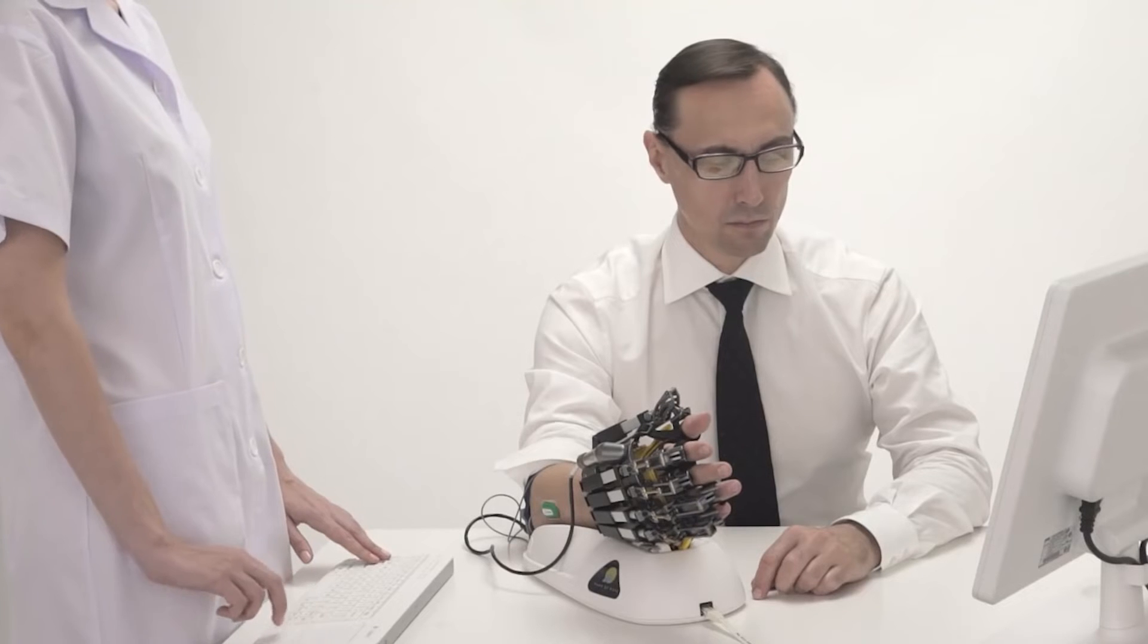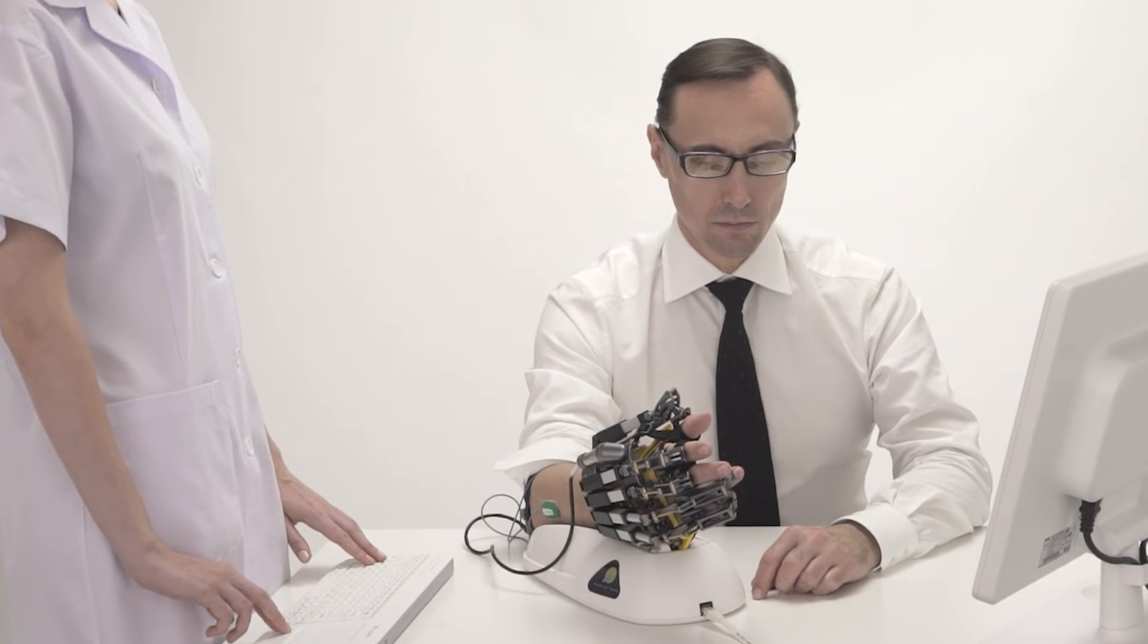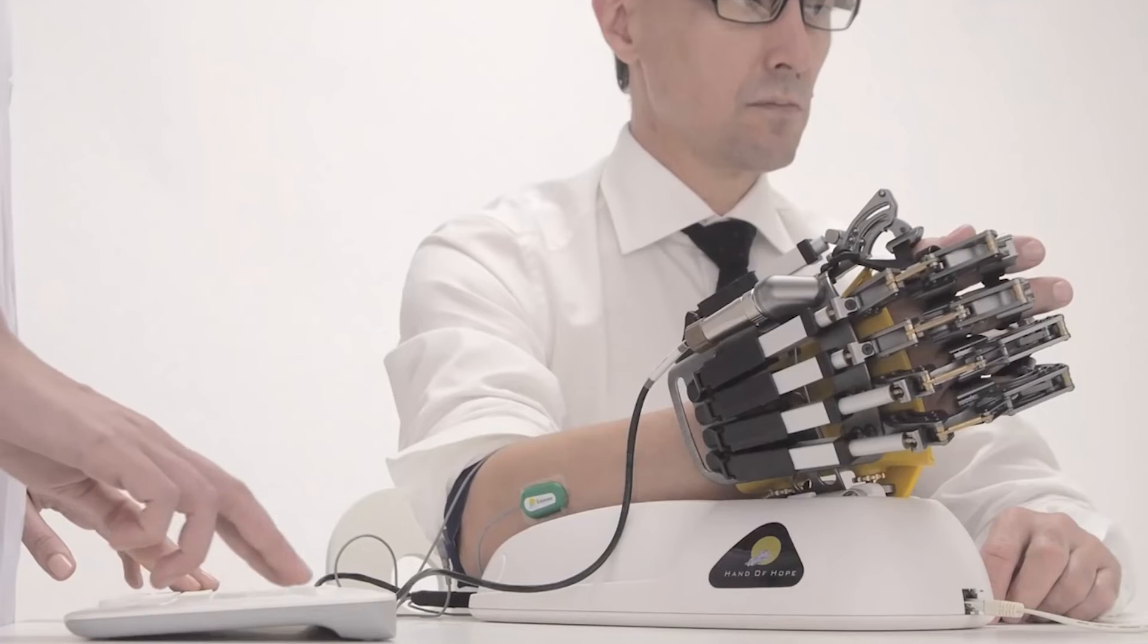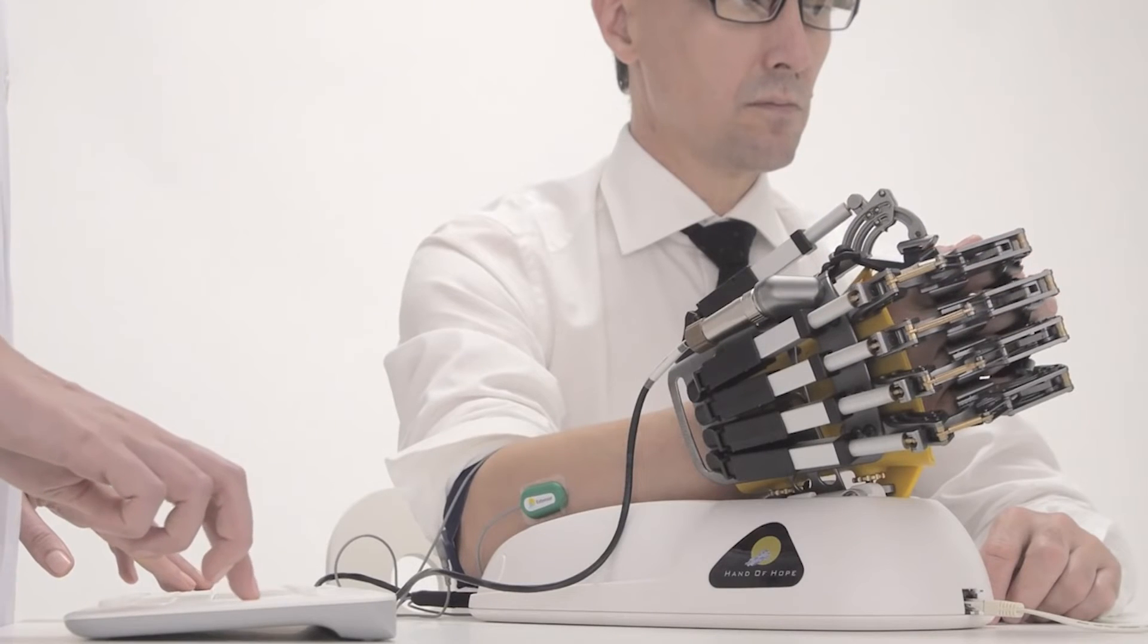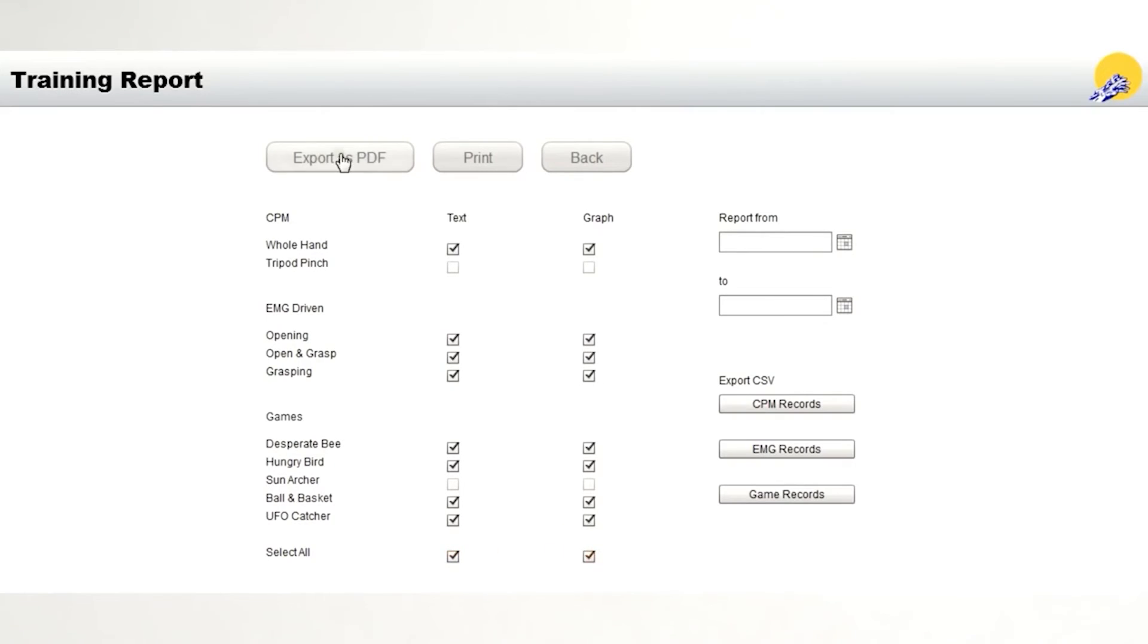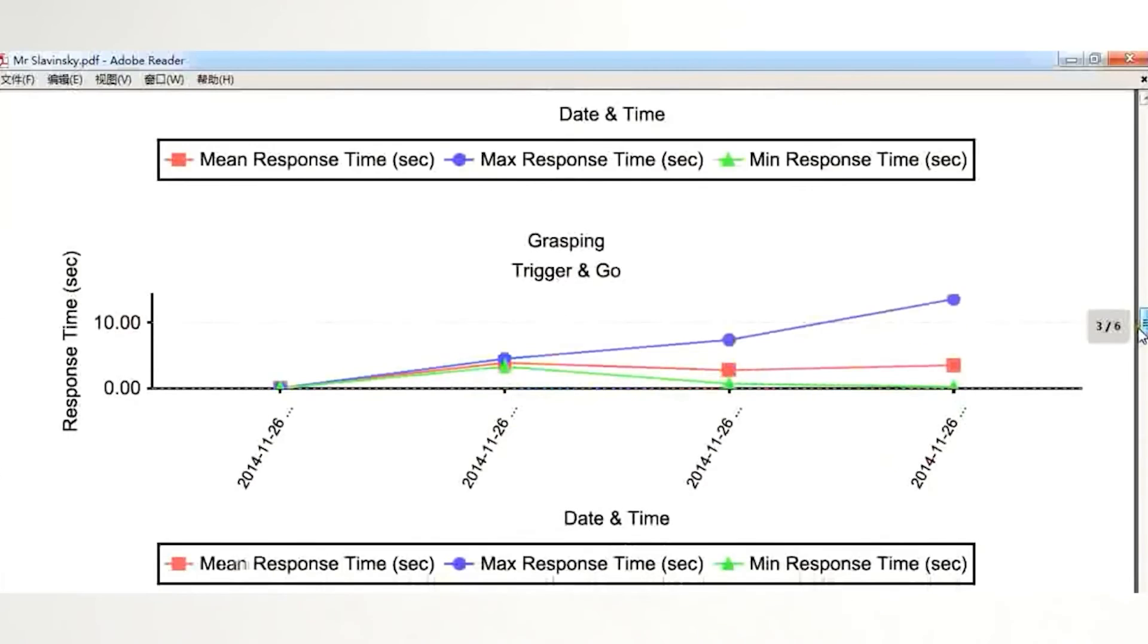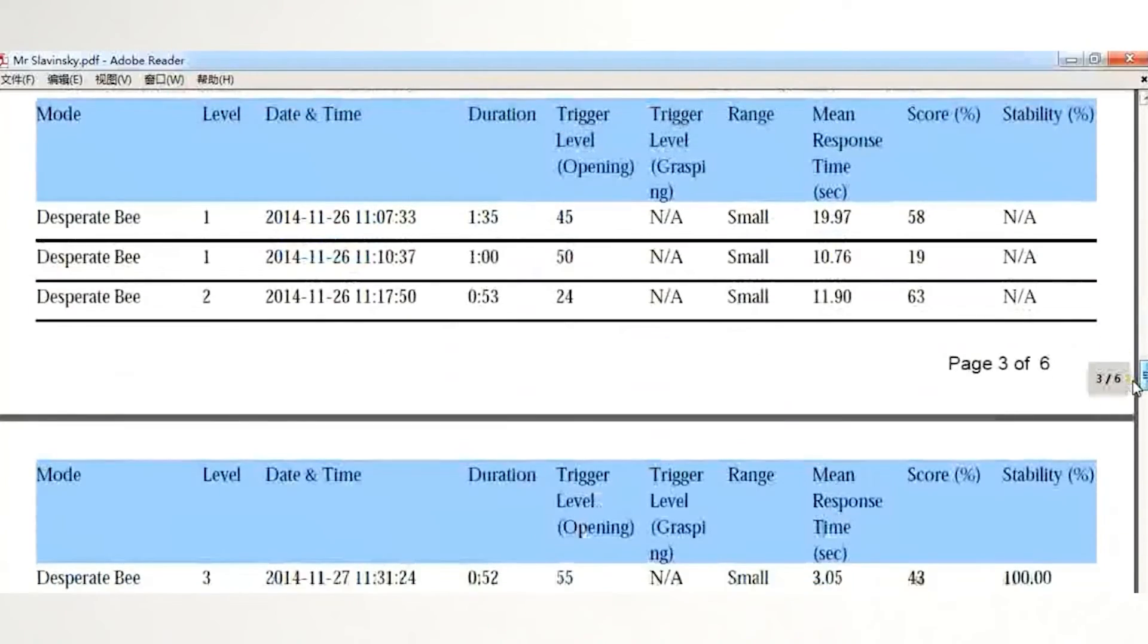Thanks to forearm support, the therapist can use the Hand of Hope for the whole arm recovery on different stages of rehabilitation. Also, therapists can easily extract the report on patient's performances in PDF or Excel file.